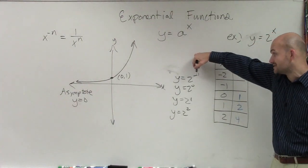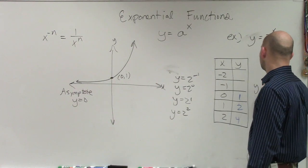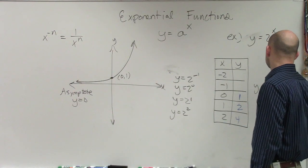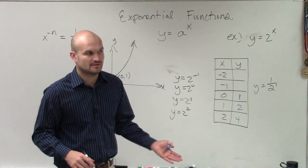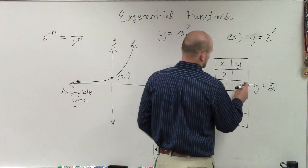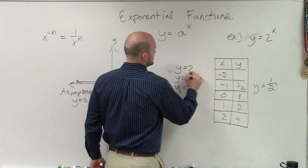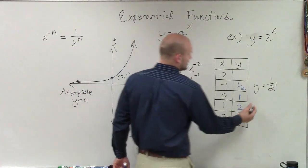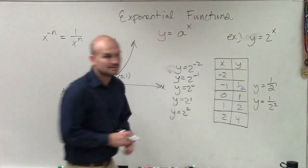x to the negative n is equal to 1 over x to the n. That's our properties of exponents. So negative 1 or negative 2 is a very common thing. But remember, all the negative exponent tells you that this is now going to be y equals 1 over 2 to the first power, and 2 to the first power is going to be 1 half. So therefore, y to the negative second power is going to be y equals 1 over 2 squared, which is 1 fourth.